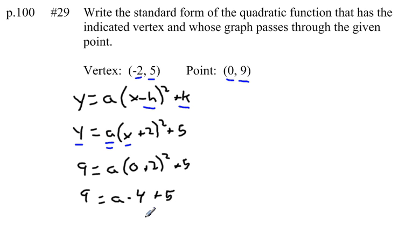Now, oftentimes people will make the mistake, they'll add the 4 and the 5 together. Careful, we're solving for a. We have to get rid of the 5 first, and then get rid of the 4. So first, let's subtract 5 from both sides. If I do that, I get 4 equals a times 4. If I divide both sides by 4 now, I get a is equal to 1.